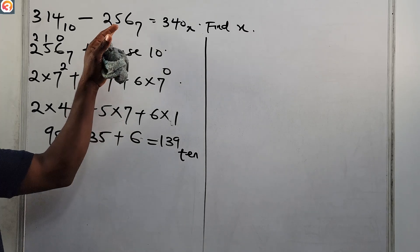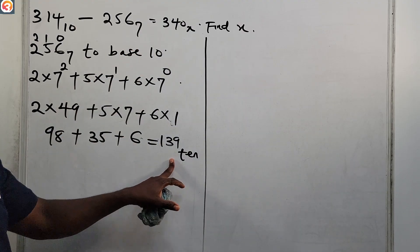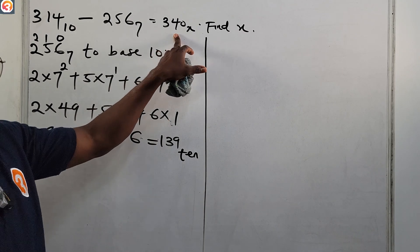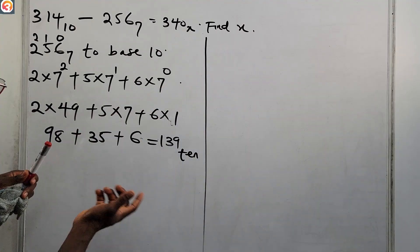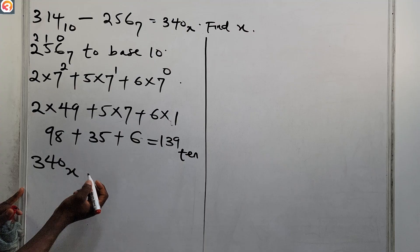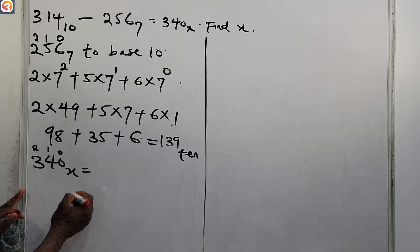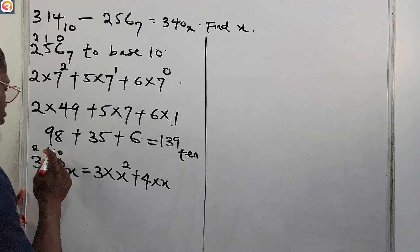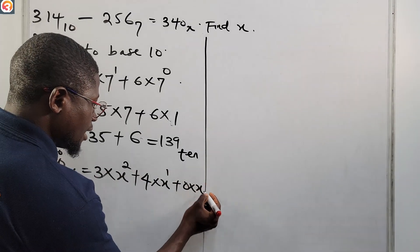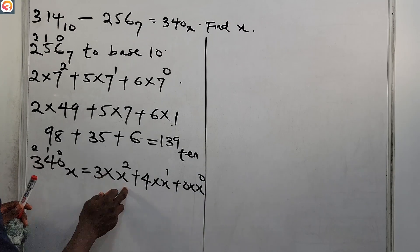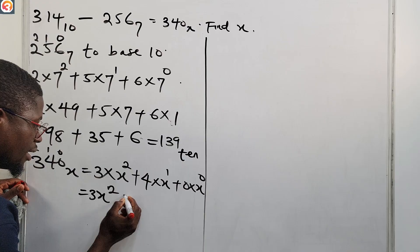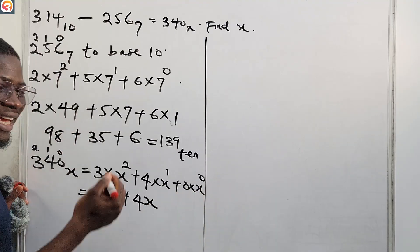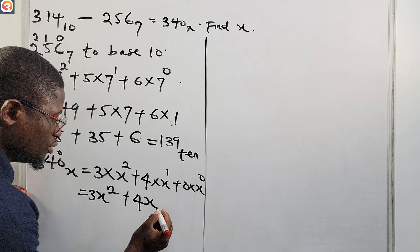Now I've converted 256 base 7 to 139 base 10, so we can handle the subtraction. But before that, let's convert 340 base x to base 10 using the same approach. The positional indices are 0, 1, 2. So we have: 3 times x raised to power 2, plus 4 times x raised to power 1, plus 0 times x raised to power 0. This gives 3x squared plus 4x plus 0, since 0 times anything is 0.